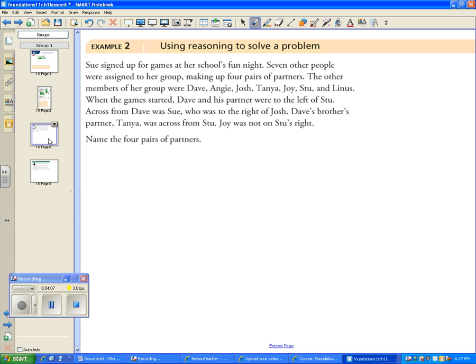Let's try this next one. Sue signed up for games at her school's fun night. Seven other people were assigned to her group, making four pairs of partners. The other members of her group were Dave, Angie, Josh, Tanya, Joy, Stew, and Linus. When the game started, Dave and his partner were to the left of Stew. What I would do here is start by drawing a table, and then I'm going to start with the first people.